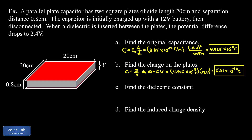Next, we find the dielectric constant. When we introduced the dielectric, the voltage dropped from 12 volts down to 2.4 volts. Since potential difference is proportional to the electric field — computed as E times d — we can find the factor by which the voltage was reduced. The new voltage is one fifth the size of the original, which means the electric field must also be one fifth the size, so the dielectric constant must be five.